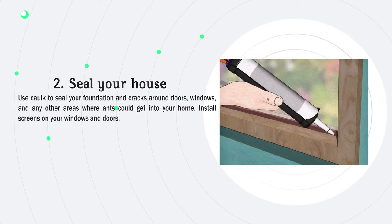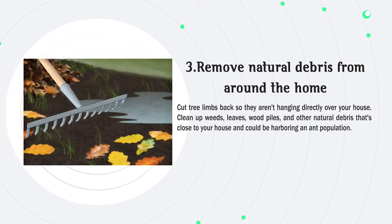Step 3: Remove natural debris from around the home. Cut tree limbs back so they aren't hanging directly over your house. Clean up weeds, leaves, wood piles, and other natural debris that's close to your house and could be harboring an ant population.